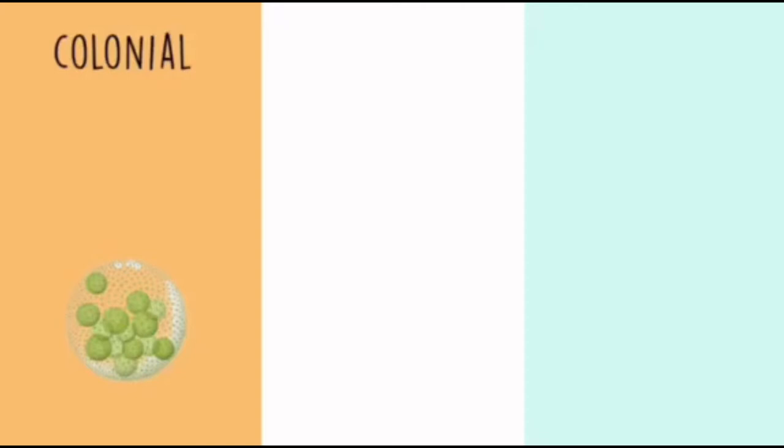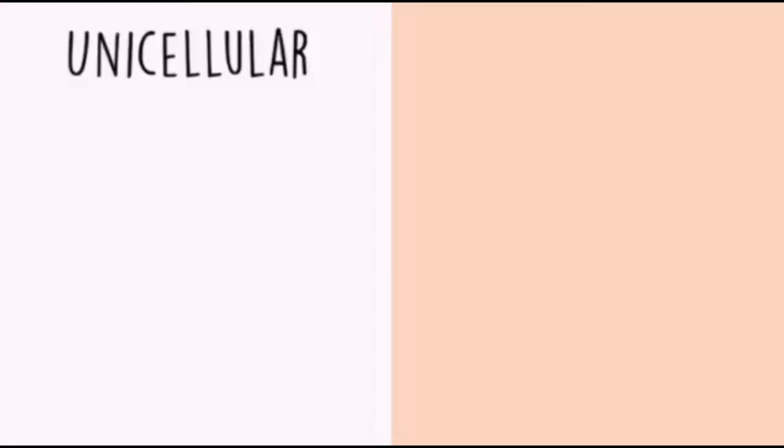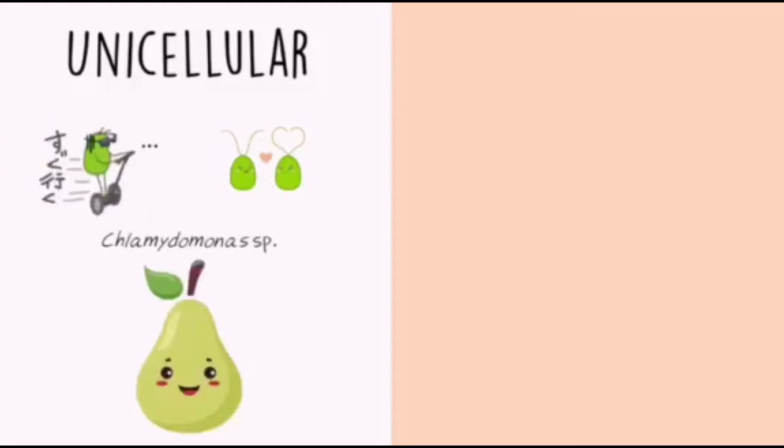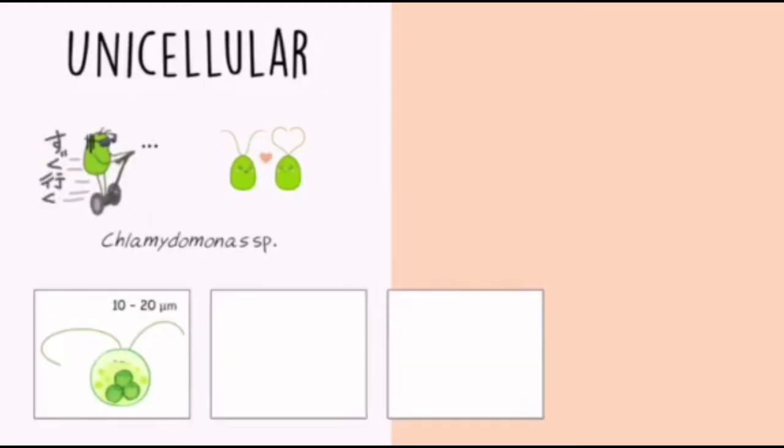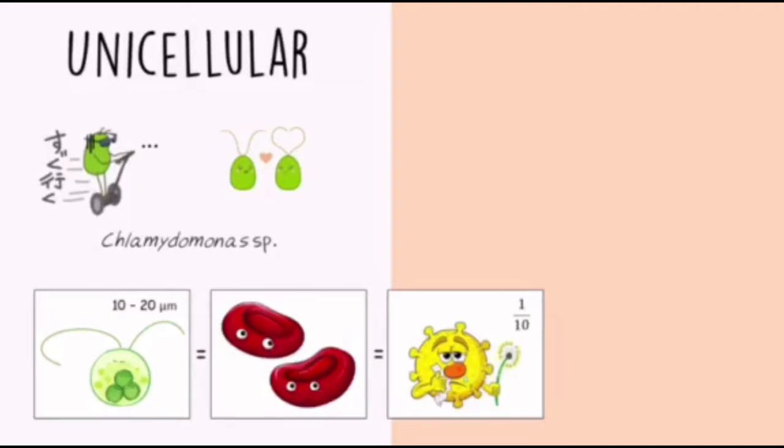Colonial forms consist of groups of cells that are differentiated morphologically and functionally. Volvox is an example of a colonial green algae and multicellular organisms such as spirogyra. There are unicellular and multicellular organisms in algae. Unicellular such as Chlamydomonas. A single cell of Chlamydomonas is pear-shaped and quite large, that is 10 to 20 micrometers in diameter, which is equal to the size of a red blood cell, which is also the equivalent of 1 over 10 of a pollen grain.